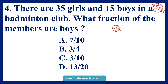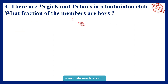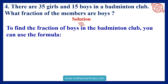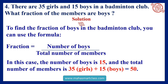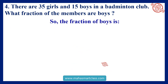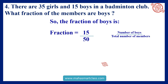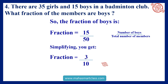There are 35 girls and 15 boys in a badminton club. What fraction of the members are boys? To find the fraction of boys, use the formula: fraction equals number of boys divided by total number of members. The number of boys is 15, and the total number of members is 35 girls plus 15 boys equals 50. So, the fraction of boys is 15 divided by 50, which simplifies to 3 divided by 10.